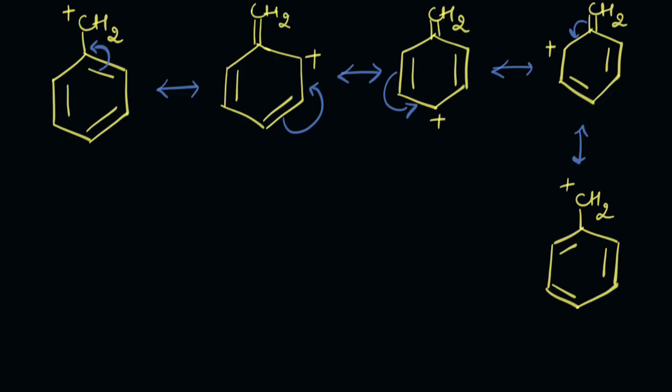Can I see a possibility of resonance? The positive charge is alternate to a pi bond. So yes, there is a possibility of resonance. Try drawing the resonating structures yourself and then we'll do it together. These are the resonating structures for the given carbocation. So there's resonance that's stabilizing this carbocation.